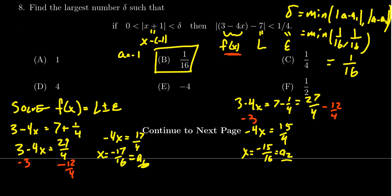Another thing I want to mention is that since our function here is linear, there's a nice shortcut: if you're given epsilon and you want to find delta, delta is just epsilon divided by the absolute value of the slope. In this one, we have 1/4 divided by the slope, which is -4, so we end up with 1/16.